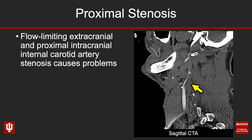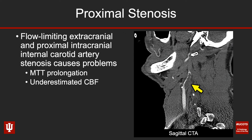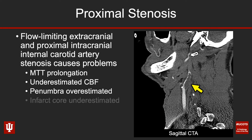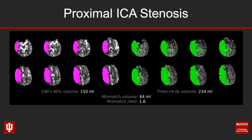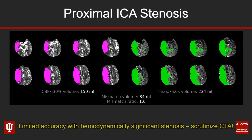It's important to keep in mind that proximal stenoses — whether extracranial or intracranial — can also impair your perfusion CT. This tends to cause prolongation of mean transit time and underestimation of cerebral blood flow, which consequently overestimates your penumbra and underestimates your core infarction — a really bad combination. It's quite critical to scrutinize the CTA in all of these perfusion CTs. You can combat this by doing delay-corrected perfusion CT for a more accurate assessment. In this patient with a very tight proximal stenosis in the right extracranial internal carotid artery, the software is picking virtually the entire MCA distribution as being at risk and infarcted — very limited accuracy in that setting.